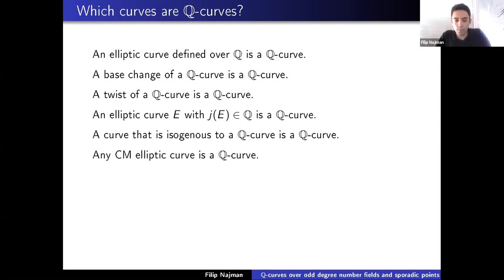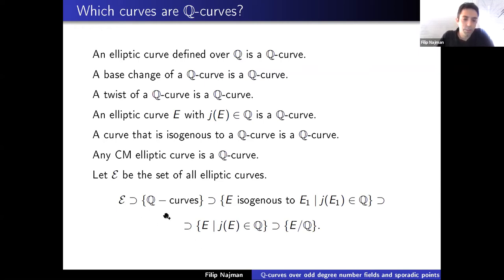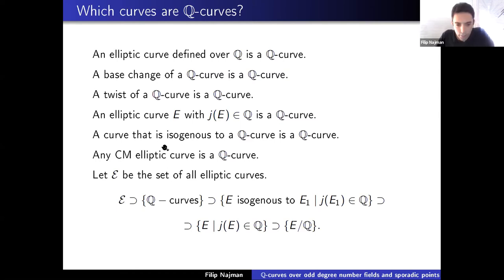The theory of complex multiplication tells us that any CM elliptic curve is also a Q-curve. We can make a tower of these sets, leaving out CM elliptic curves which don't fit in nicely. The tower goes: all elliptic curves, which includes Q-curves, which includes elliptic curves isogenous to those with rational J-invariant, which includes elliptic curves with rational J-invariants themselves, which includes base changes of elliptic curves. This tower will appear several more times — I may even call it the fundamental tower of my talk.